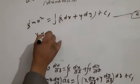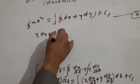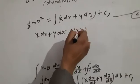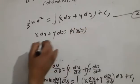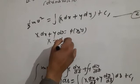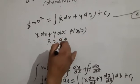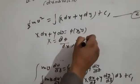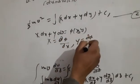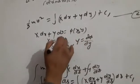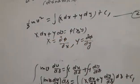Let us take X·dx + Y·dy = dφ, where capital X equals ∂φ/∂x and capital Y equals ∂φ/∂y.